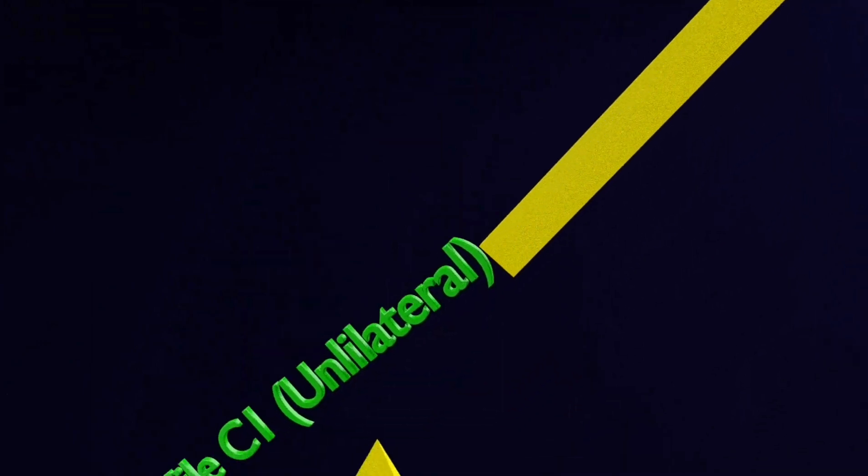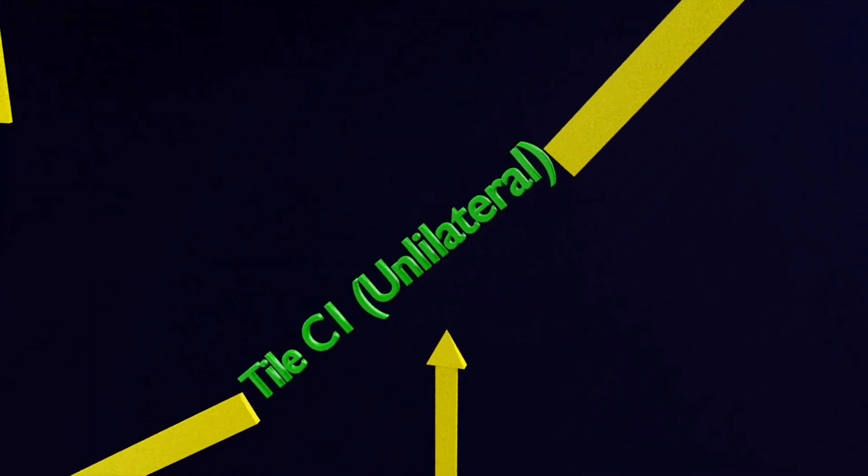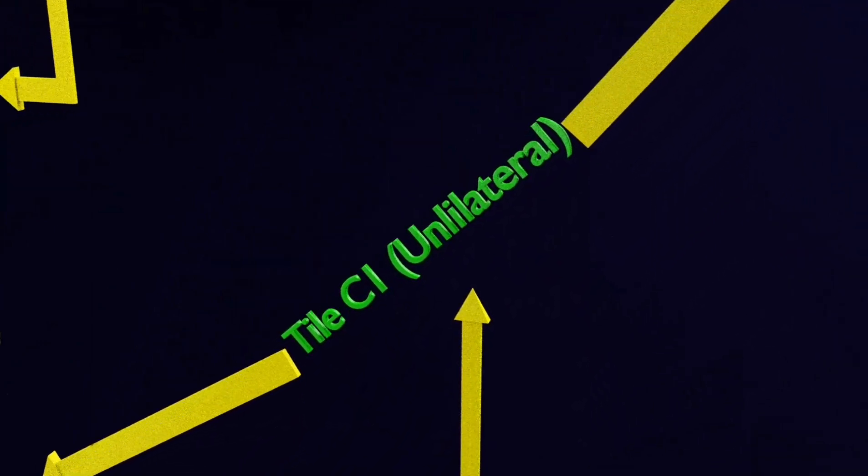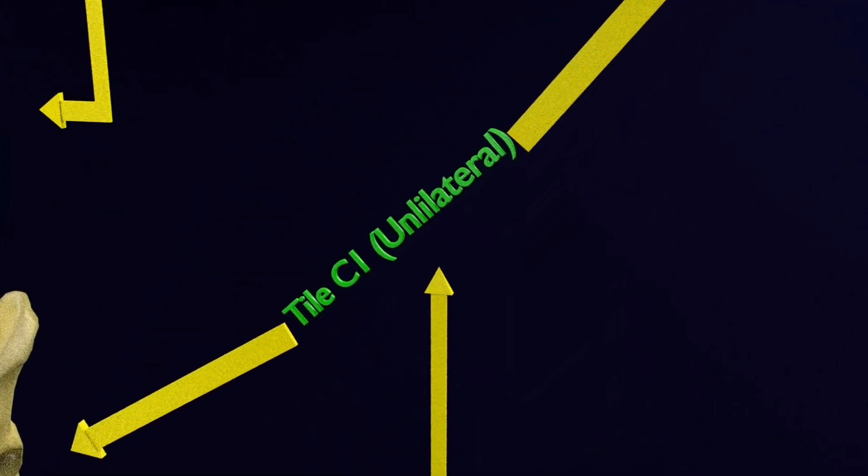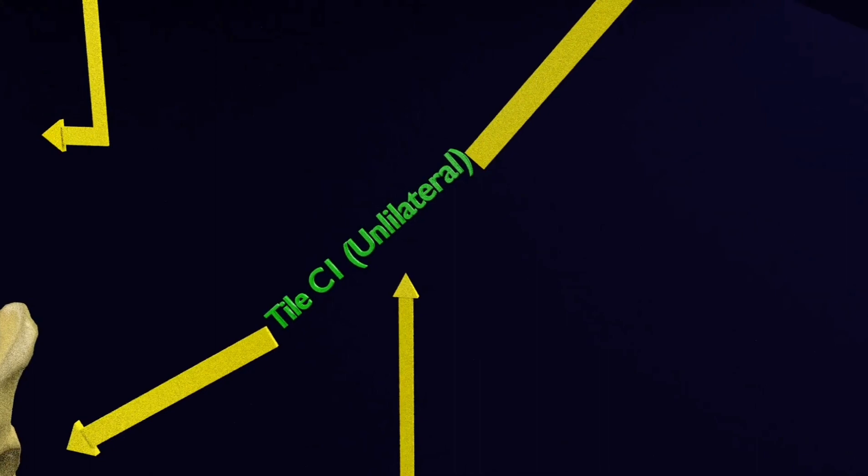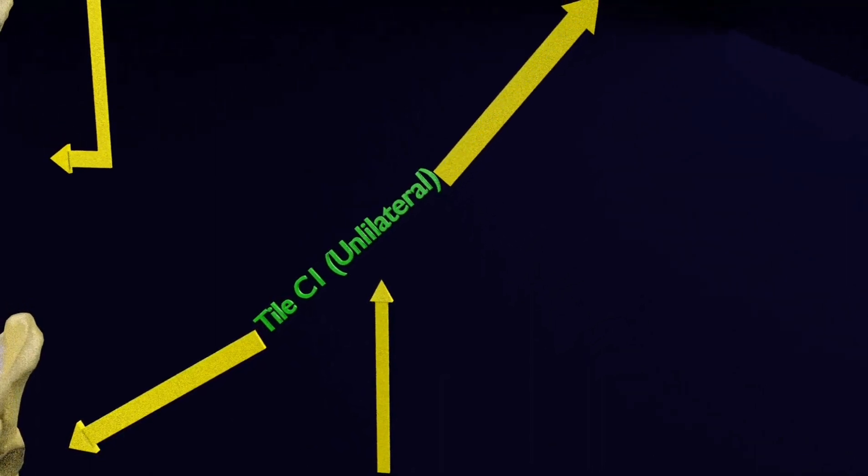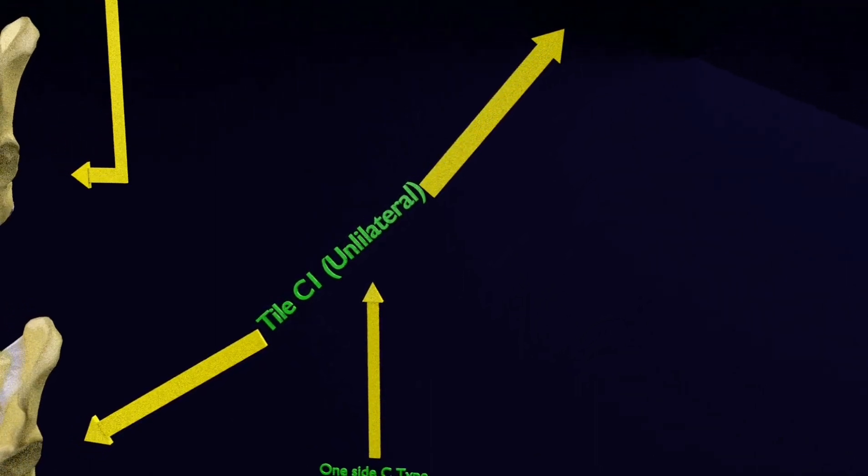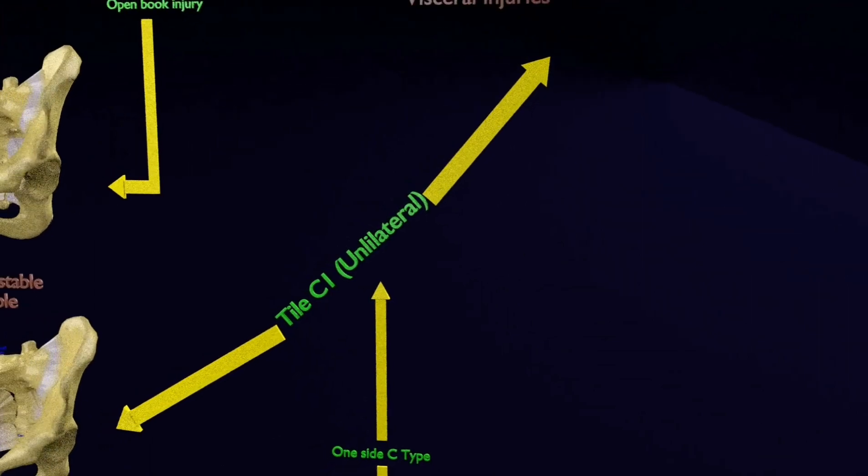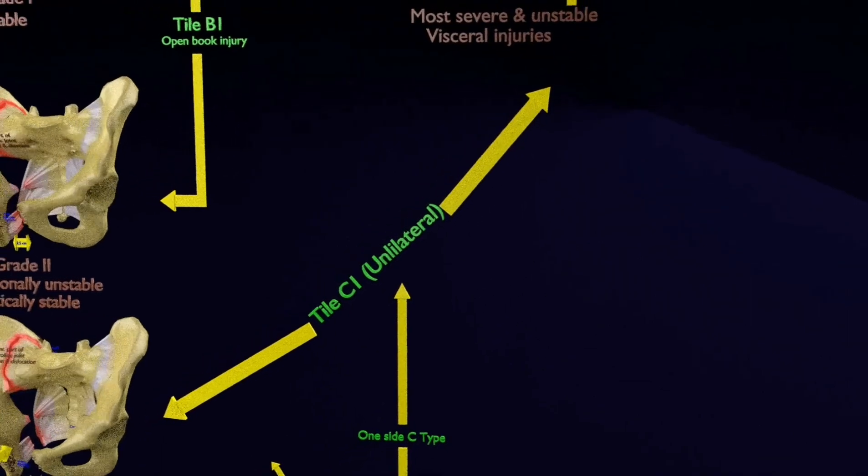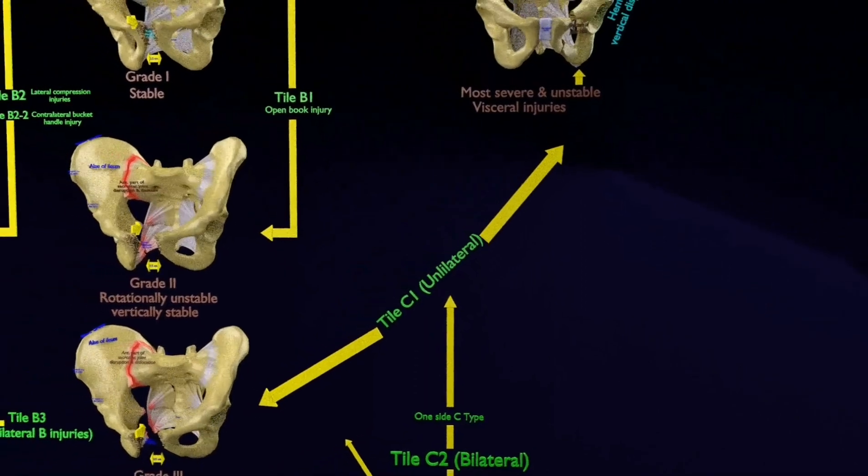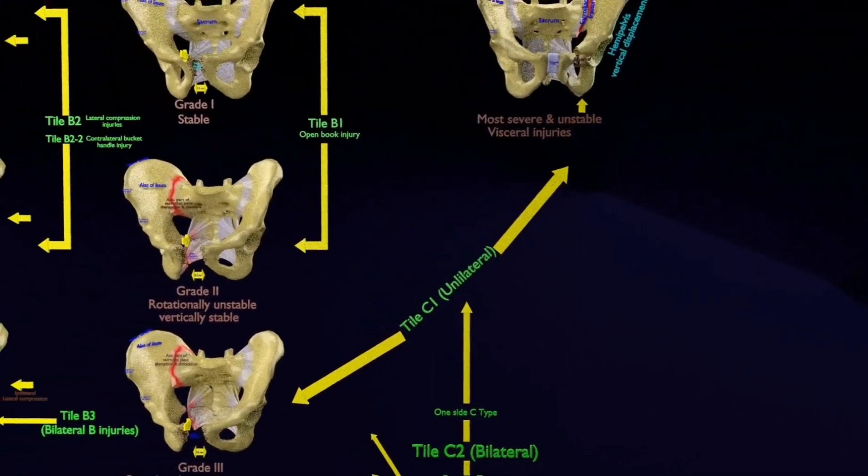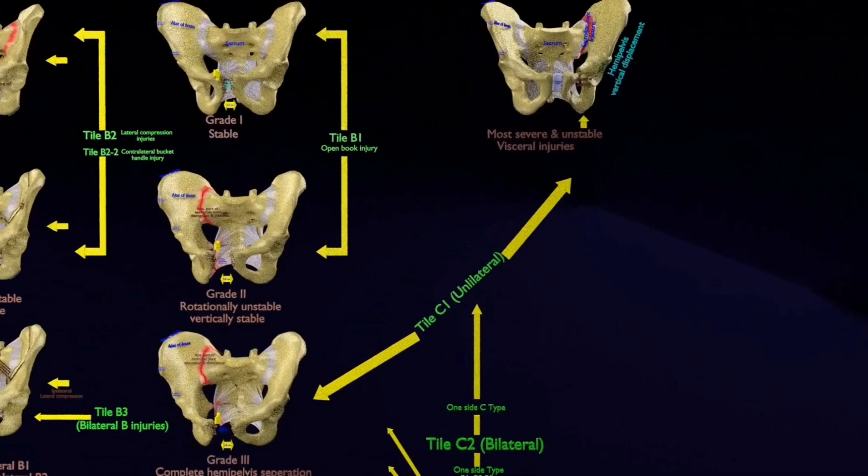Both grade 3 of the APC and vertical shear can be named as C1 Tile. And these type C injuries are characterized by complete disruption of posterior sacroiliac complex and are both rotationally and vertically unstable. These injuries are a result of a great force, as said from a motor vehicle crash, fall, jump, or severe compressions.